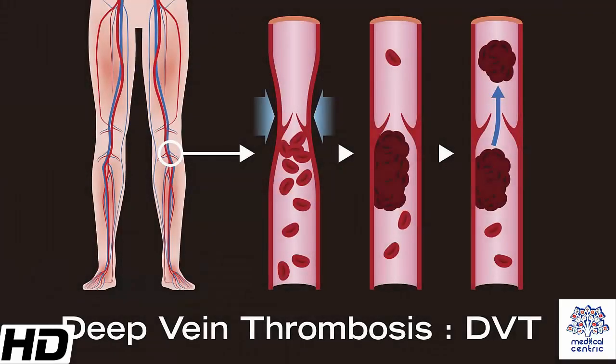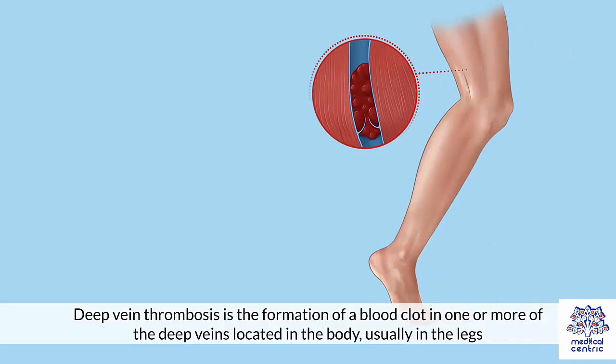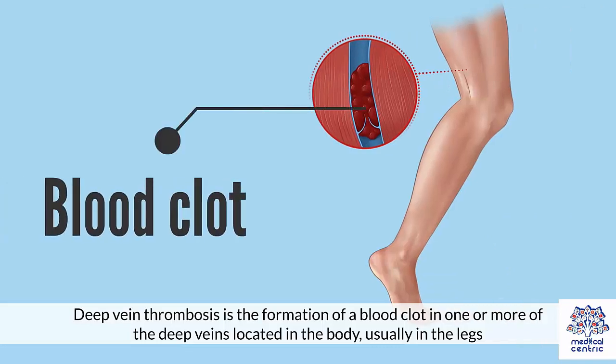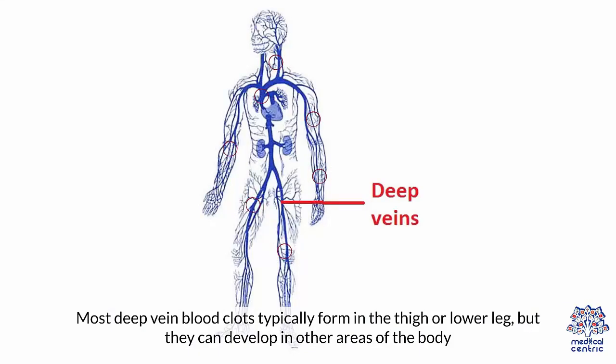Today's topic is Deep Vein Thrombosis, or DVT. Deep vein thrombosis is the formation of a blood clot in one or more of the deep veins located in the body, usually in the legs. Most deep vein blood clots typically form in the thigh or lower leg, but they can develop in other areas of the body.